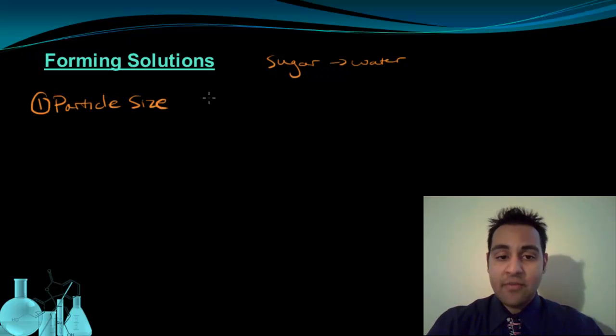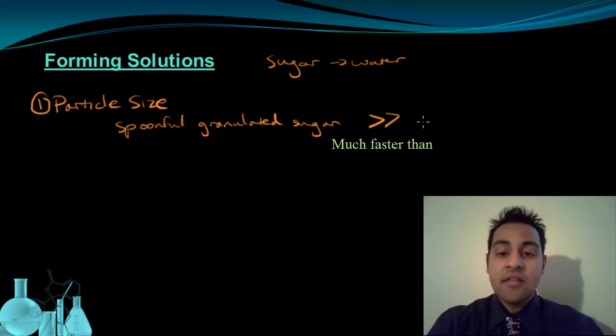If we look back at our example, a spoonful of granulated sugar is going to be faster than a sugar cube at dissolving. Why is that? Well, the spoonful of granulated sugar, even if it's the same amount of sugar as a sugar cube, has more surface area.